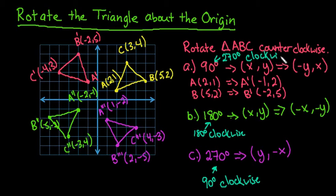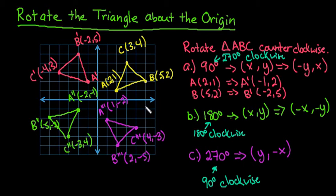Just in case you are asked to go clockwise: 270 degrees counterclockwise is the same as 90 degrees clockwise; 180 degrees counterclockwise is the same as 180 degrees clockwise; and 90 degrees counterclockwise is the same as 270 degrees clockwise. If you rotate 360 degrees, it takes you back to your original drawing. Most of the time you won't do all three on the same graph, but I did it here to save time. Thanks for watching — if you have any questions or additional topics you'd like covered, please let me know.